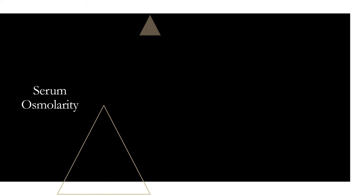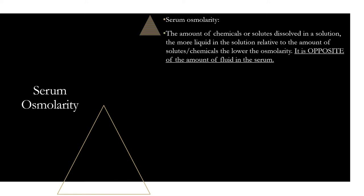Another concept to understand is serum osmolarity — the amount of chemicals or solutes dissolved in a solution. We'll be talking about both urine and serum. The more liquid in the solution relative to the amount of solutes, the lower the osmolarity. So it's opposite to the amount of fluid in the serum: a large amount of fluid relative to solutes means low serum osmolarity, while a small amount of fluid means high serum osmolarity.